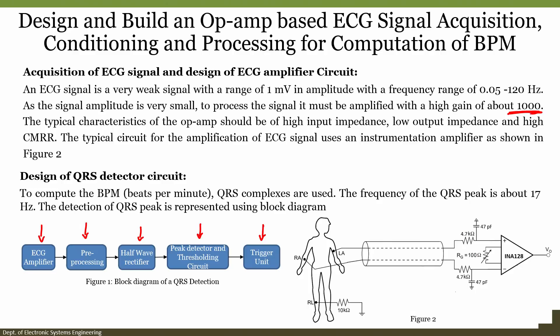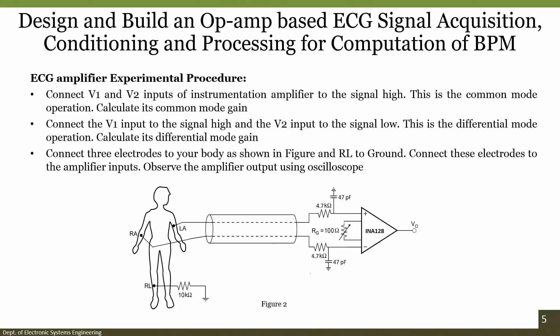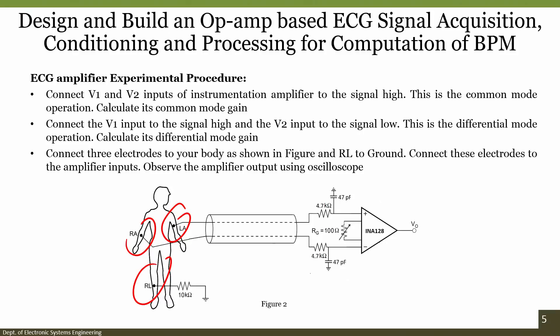Now let us see how to develop the ECG amplifier for QRS signals as well as BPM. First, connect V1 and V2 — the inputs to the instrumentation amplifier — to the signal high. This is the common mode operation and we calculate the common mode gain. Second, connect V1 to signal high and V2 to signal low; this is differential mode operation and we calculate the differential mode gain. Finally, connect all three electrodes — RA, LA and RL — to the body, with RL connected to ground through a 10 kilohm resistor, then connect the electrodes to the amplifier inputs and observe the output on the oscilloscope.